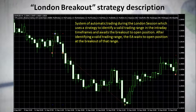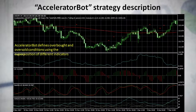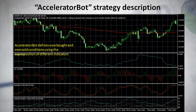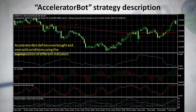Let's move forward to another strategy which is called Accelerator Bot. This Expert Advisor defines overbought and oversold conditions using the superposition of different indicators like ADX, Stochastic, Accelerator, and ATR. This Expert Advisor works on USD/Japanese Yen, and I also optimized it for other cross courses with Japanese Yen. This strategy is a swing trading strategy.